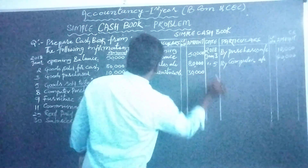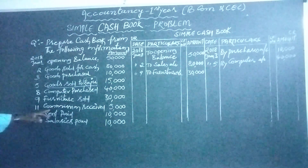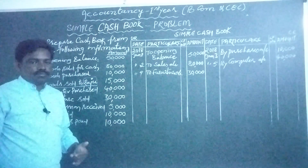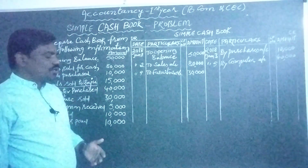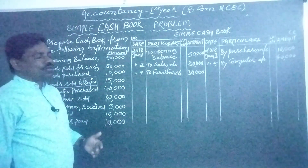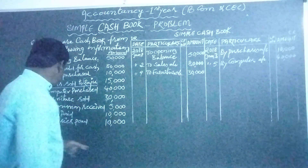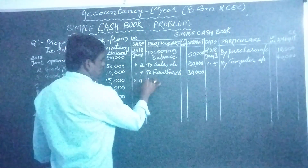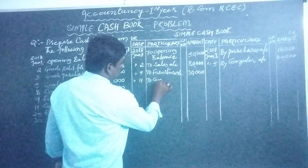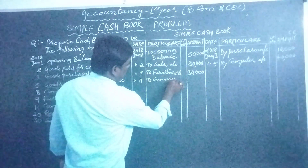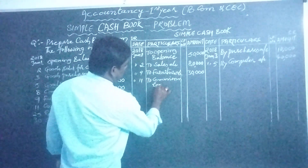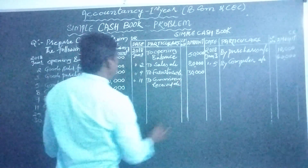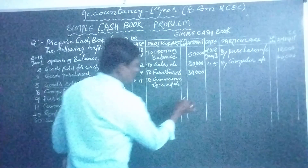Next, commission received: we received commission in the form of cash, so it is a receipt recorded on the debit side. January 11th — 'commission received account' — rupees 5,000.